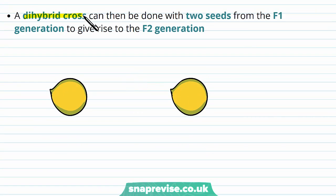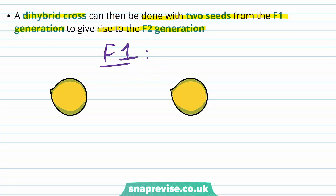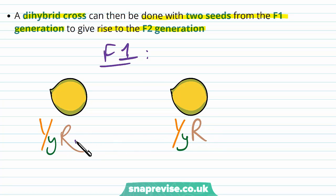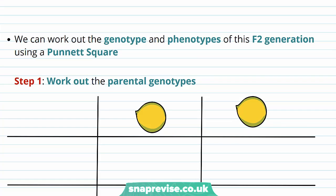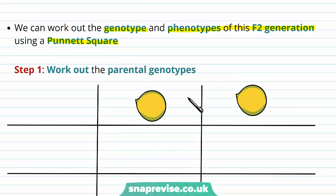We can then use the dihybrid cross with two seeds from the F1 generation — which all have the same genotype YyRr — to give rise to the F2 generation. We work out the genotypes and phenotypes of this F2 generation using a Punnett square in exactly the same way as before. The key difference this time is the structure and combination of gametes.